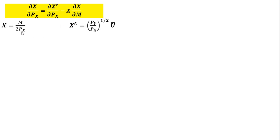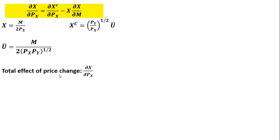So once again, here is our Slutsky equation. The key components we need are: the demand for good x, the compensated demand for good x, and the indirect utility function. Let's start with the total effect of the price change. The total effect is the left-hand side term — it's just the partial derivative of the ordinary demand function with respect to the price of good x. Taking that partial derivative of our ordinary demand, we get this result, which is negative, as expected since demand curves slope downward.